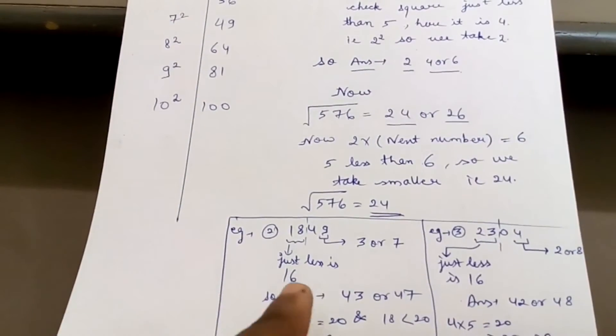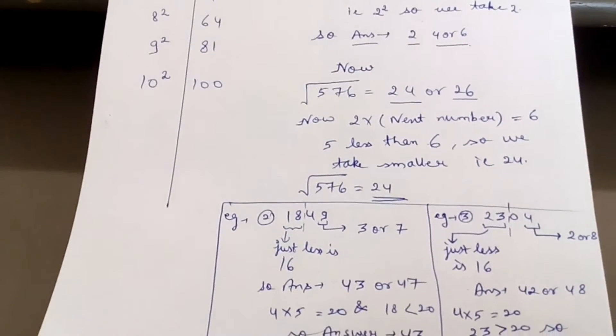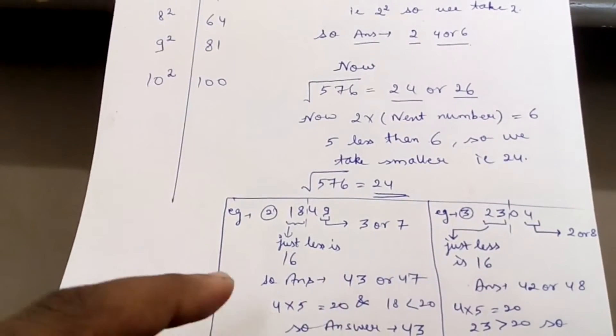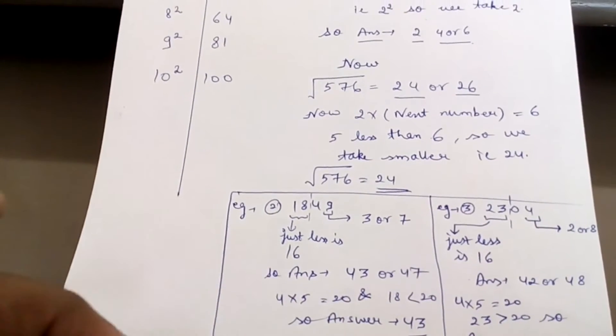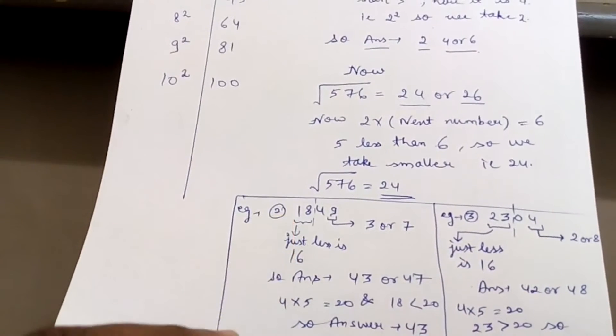Now how to eliminate and find the correct: you take 4, multiply it with the next digit, that is 4 into 5, that is 20. And here 18 is less than 20, so you will keep the smaller. So answer will be 43.